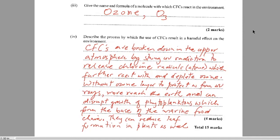CFCs are broken down in the upper atmosphere by strong UV radiation, which results in the releasing of chlorine radicals or chlorine atoms, which further react with and deplete ozone. Without the ozone layer to protect us from harmful UV rays, more of it will reach the Earth and can disrupt the growth of phytoplanktons which form the base of the marine food chain. It can also reduce leaf formation in plants, which are also at the base of the human food chain. Those are the harmful effects on the environment — we don't mention cancer or cataracts because the question asks for effects on the environment specifically.